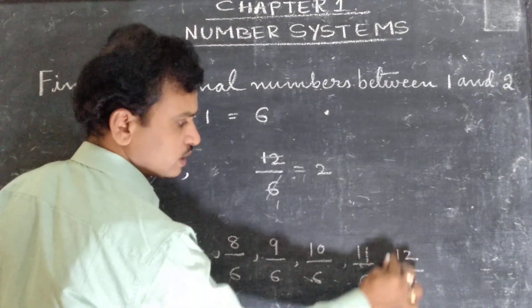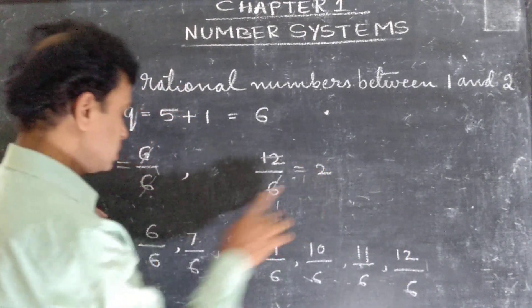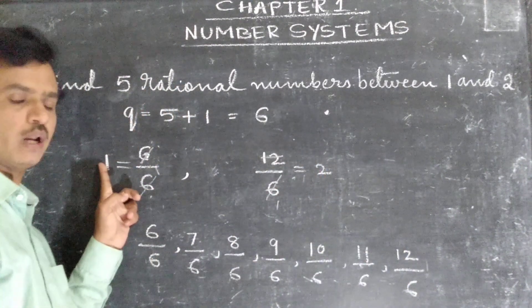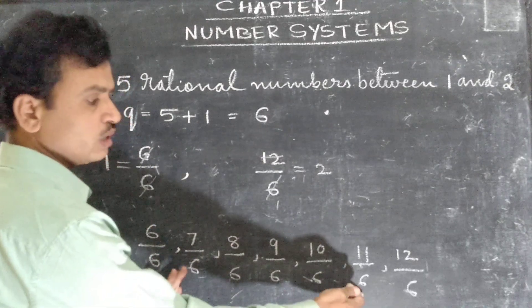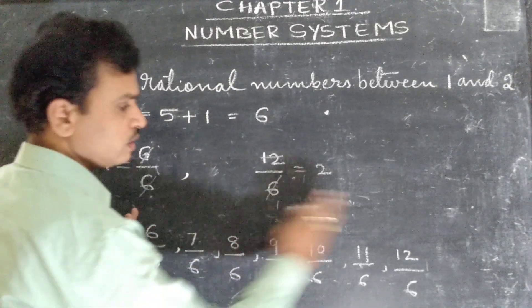That means this part we got, this answer we got here is 2. Here 6 by 6, the answer is 1. That means we got this many rational numbers in between 1 and 2.